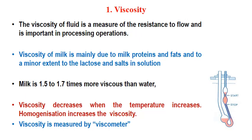Viscosity decreases when temperature increases, because temperature causes melting of fat and that reduces the resistance. Similarly, homogenization increases viscosity because it breaks the larger particles, distributes them more evenly, and thereby causes more resistance. This viscosity is measured by an instrument called a viscometer.